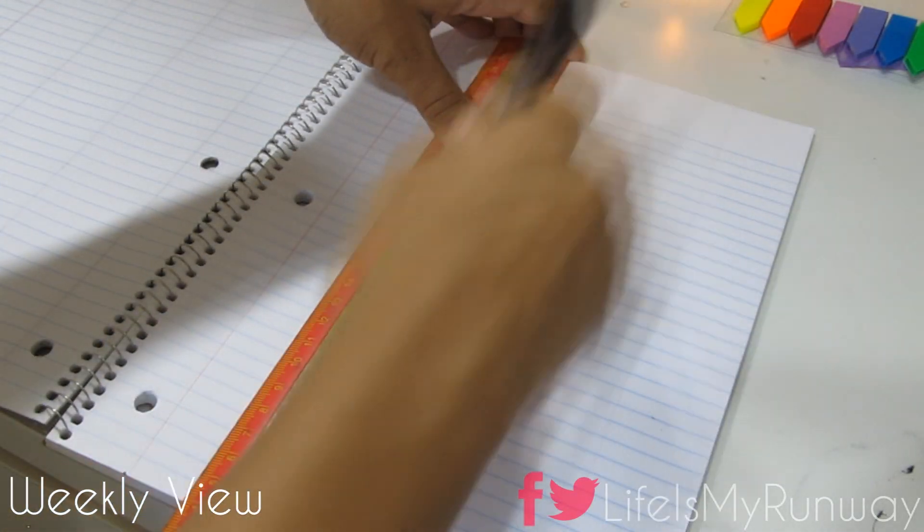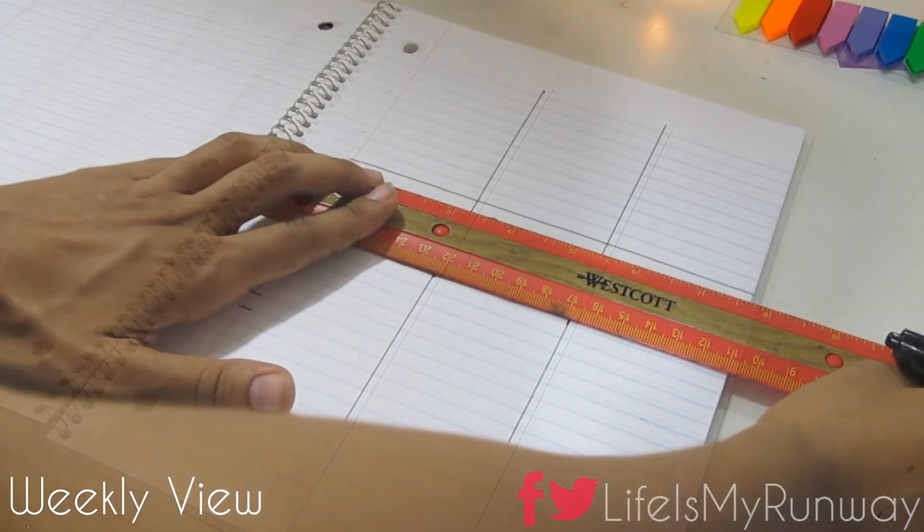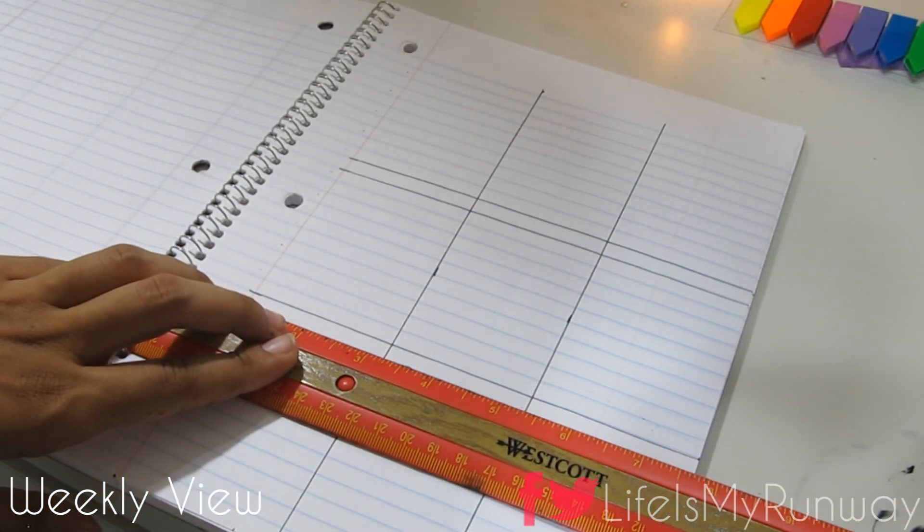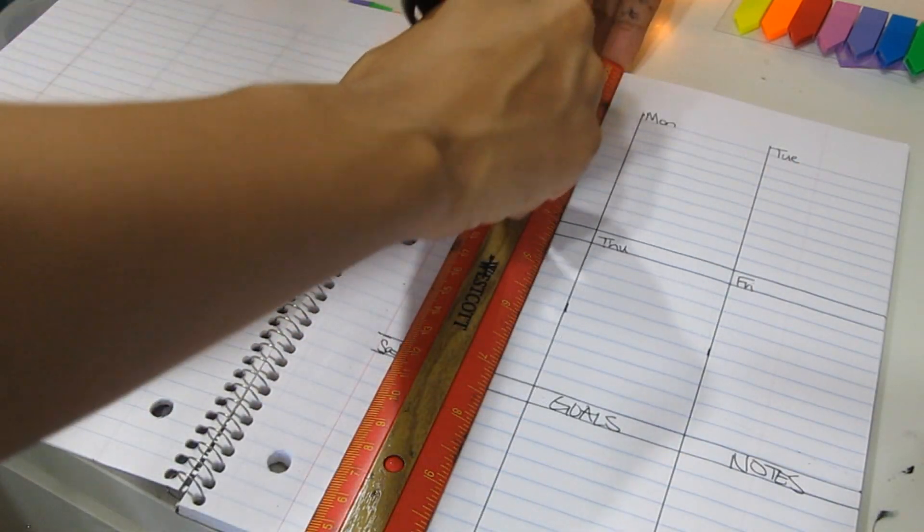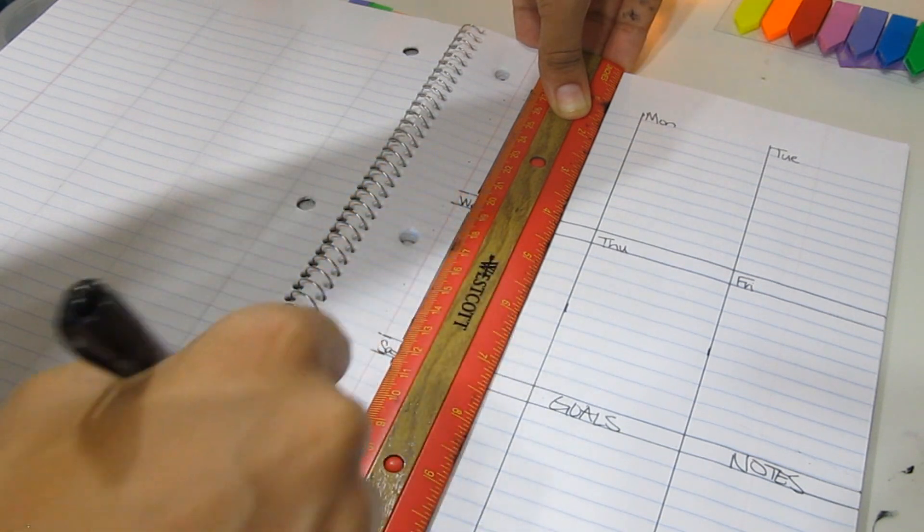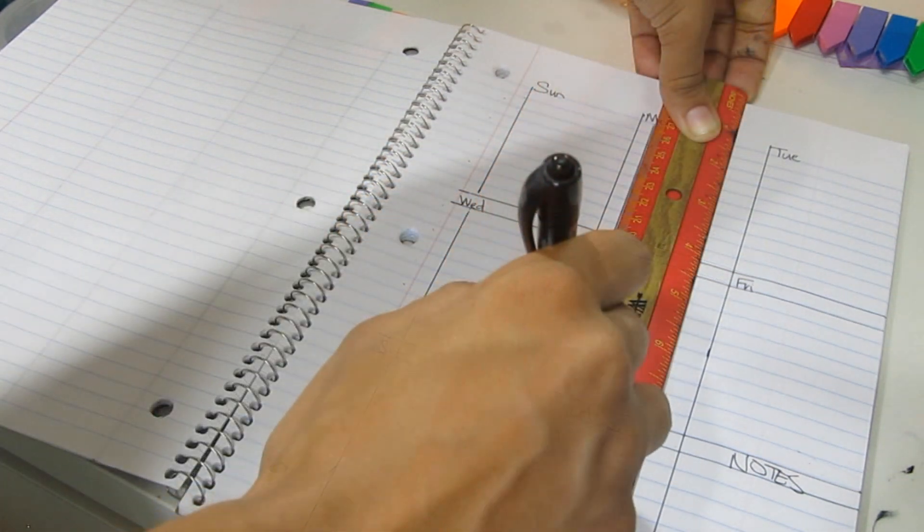Now it's time to create the weekly view. I broke the page down into three even sections and evenly spaced it from top to bottom. Again, this is completely up to you how you want to do it. This is just my preference because it makes everything easier to see.